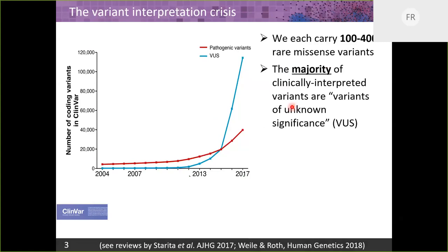Probably many of you are here because you're aware of this problem: it's estimated that each of us carries 100 to 400 rare missense variants. Not all of those are in disease-associated genes, but when missense variants do need to be interpreted, the majority are given the designation variants of unknown significance — which is considered a not clinically actionable result. The major motivation here is to try to change that.